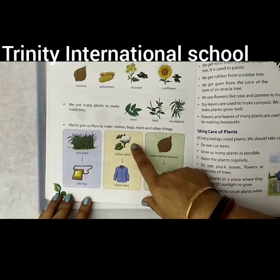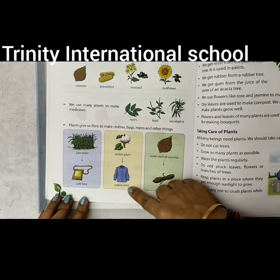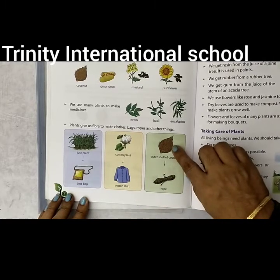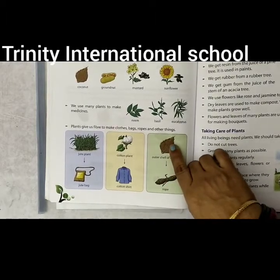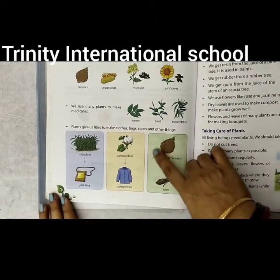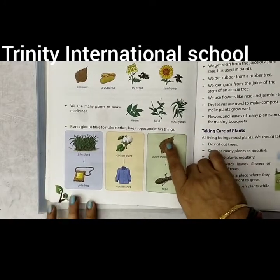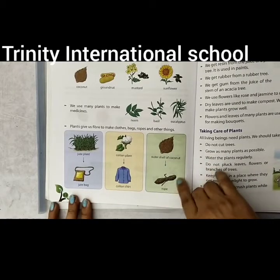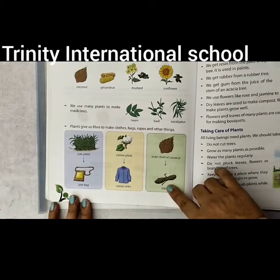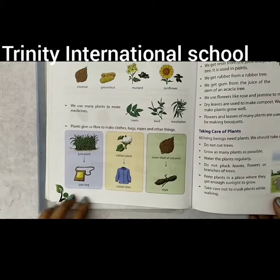You can also get fiber from the cotton plant, and from cotton plant you can make cotton clothes. The outer shell of your coconut also has fibers, and those fibers are used to make rope. These are all fibers we get from plants.